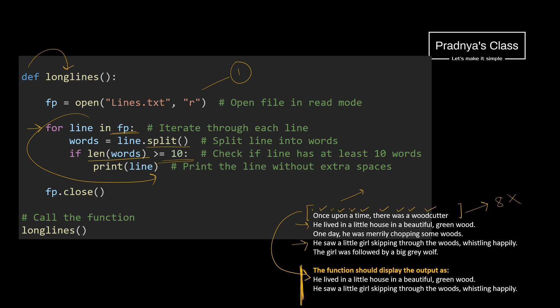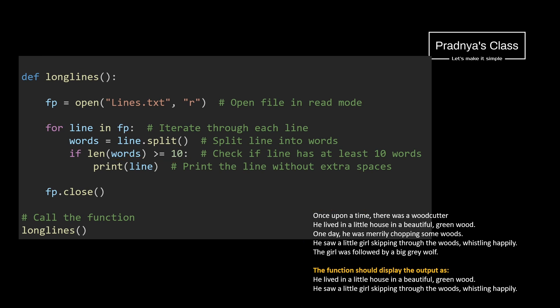If you want to practice this in VS Code, create the text file with the given data and then write the code. Whenever you write a program on text file, read the question carefully — whether you need to count the words or display the words, display the lines or count the lines, and modify your program accordingly.